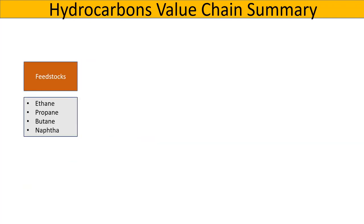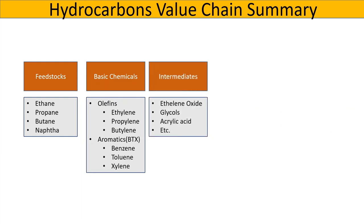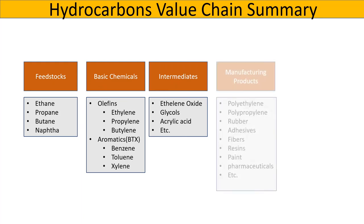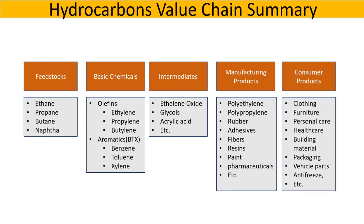Let's look at a summary of the hydrocarbons value chain. We start with feedstock or petrochemicals to the cracker like ethane and naphtha. Then basic or commodity chemicals such as olefins and aromatics. Then intermediate or derivative products like ethylene oxide and acrylic acid. Then manufacturing products like polyethylene. The final value chain component is consumer products such as clothing and furniture.